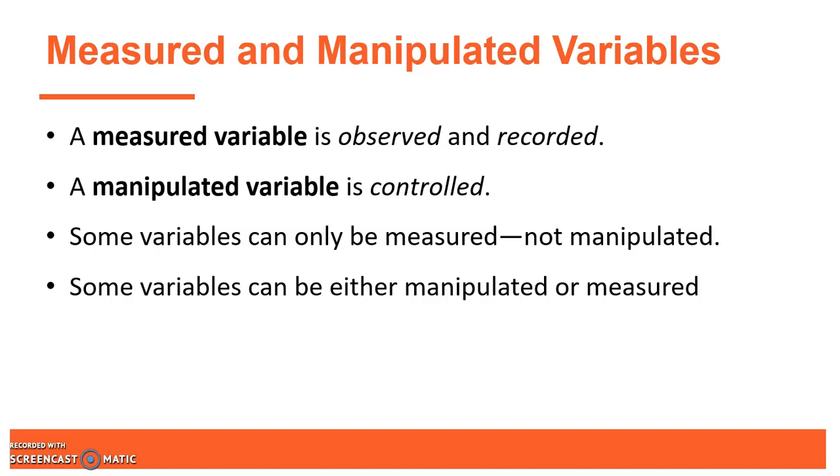Sometimes we just measure them, like you can't really assign somebody to have a certain age. That's just something that you measure, whereas a manipulated variable is something that's controlled. So that would be like the placebo versus drug. You either receive one or the other, and that's something that you have control over as the experimenter.